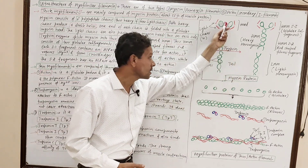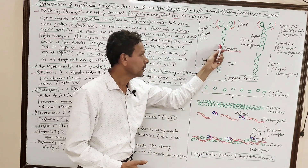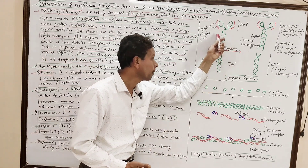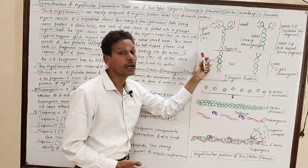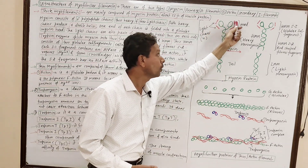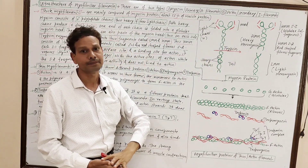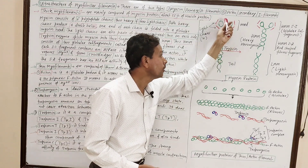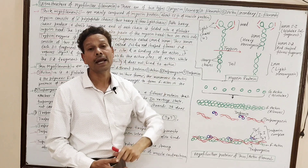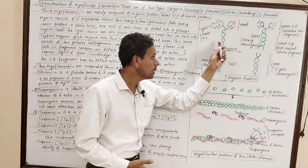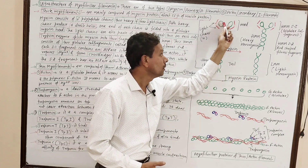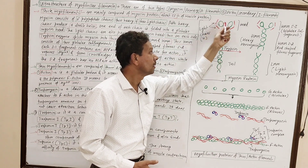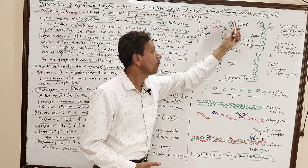Each myosin protein — this is the structure of myosin protein — it consists of 6 polypeptide chains. Out of these 6 polypeptide chains, 2 polypeptide chains are heavy chains and 4 polypeptide chains are light chains. One free end of each heavy polypeptide chain produces globular heads, meaning each myosin protein has 2 myosin heads. On both sides of these heads, a pair of light chains are present.